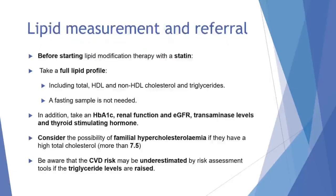Before starting lipid modification therapy with a statin, we must take a full lipid profile including total cholesterol, HDL cholesterol, non-HDL cholesterol and triglycerides — a fasting sample is not needed for this. We also need to take an HbA1c, renal function and eGFR, transaminase levels and thyroid stimulating hormone. We must consider the possibility of familial hypercholesterolemia if the patient has a total cholesterol greater than 7.5. We must also be aware that the cardiovascular risk may be underestimated by risk assessment tools if triglyceride levels are raised.